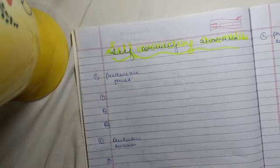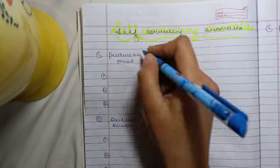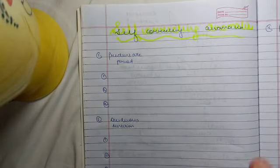In this video, we will talk about the self-correcting anomalies according to the various periods of development of occlusion. Coming on to the first one is the pre-dentate period.